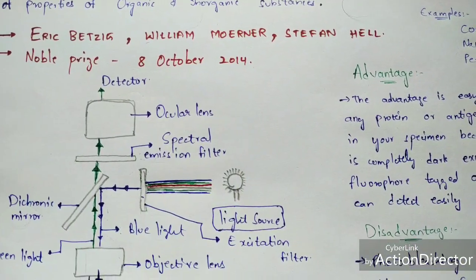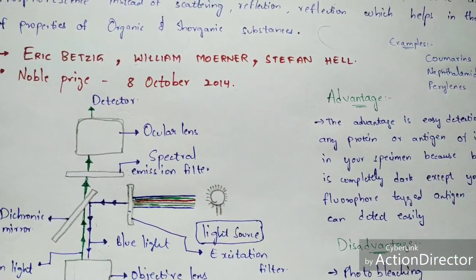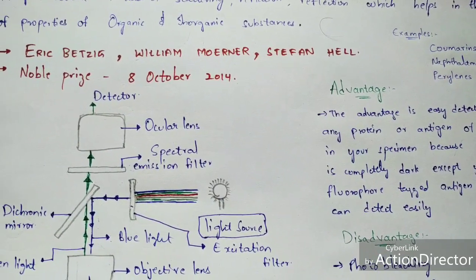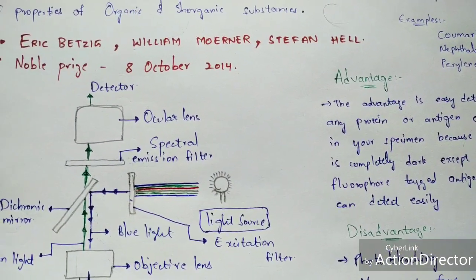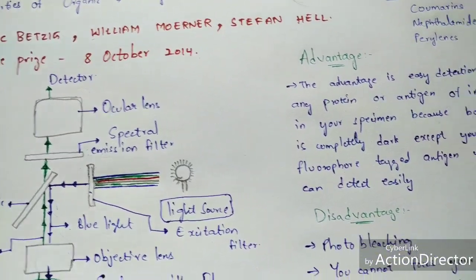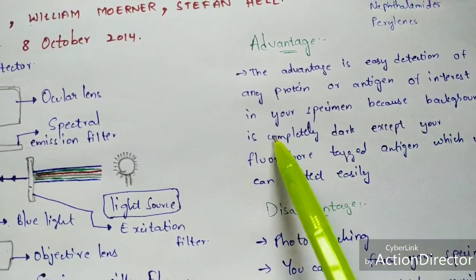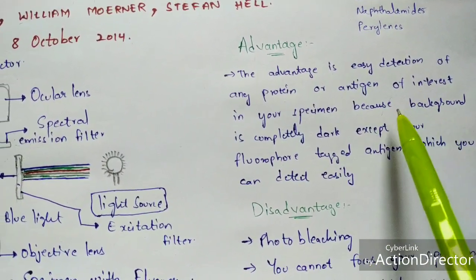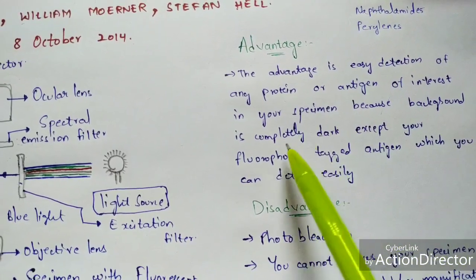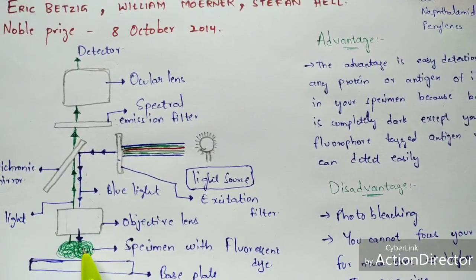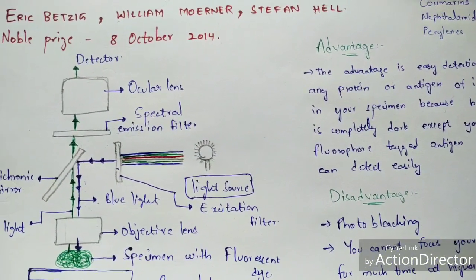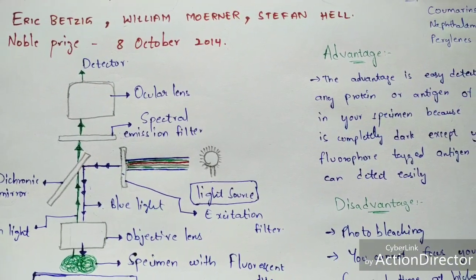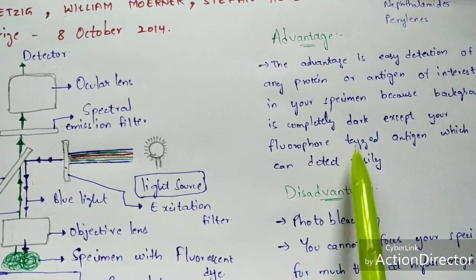Another advantage is that the background is completely dark except for your fluorophore-tagged antigen. In the image formed, only the region of interest — tagged with the fluorophore mixed with the specimen — will appear very bright, while the surrounding background region will be completely dark, appearing totally black. This makes it easy to identify the specific object of interest.